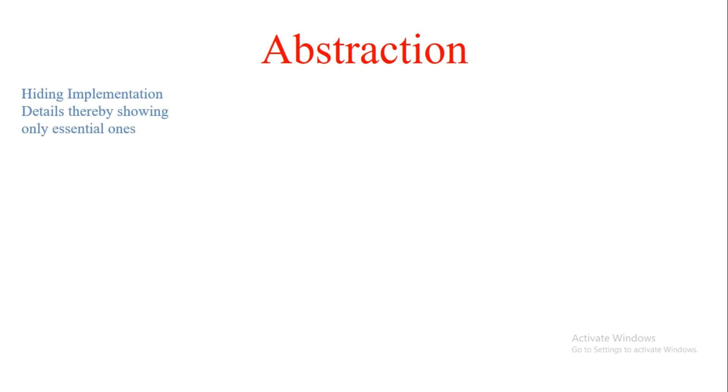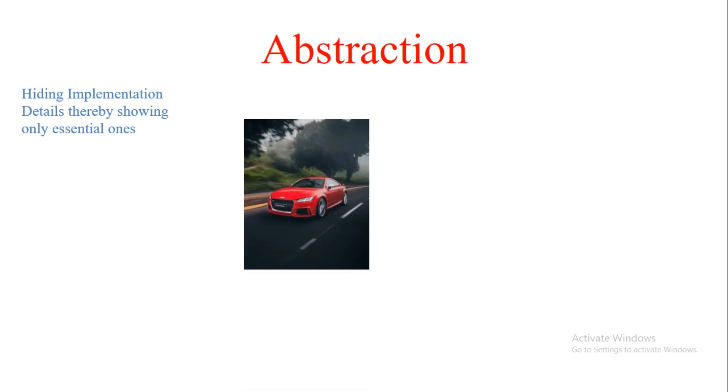Hi guys, welcome to Code Decode. In the previous videos we covered almost all the OOP concepts. The last one remaining to complete is abstraction. Abstraction is nothing but a way of hiding implementation details, thereby showing only the essential ones.